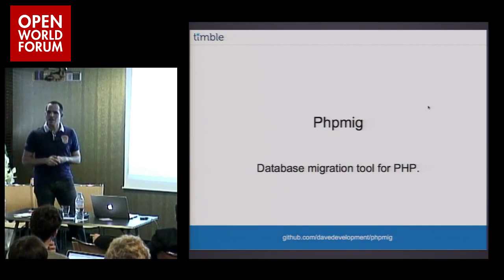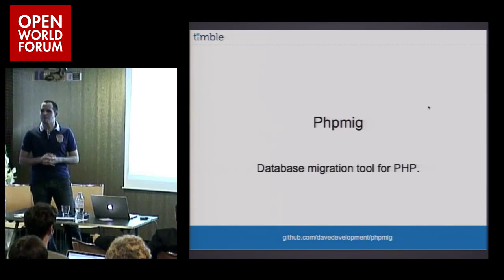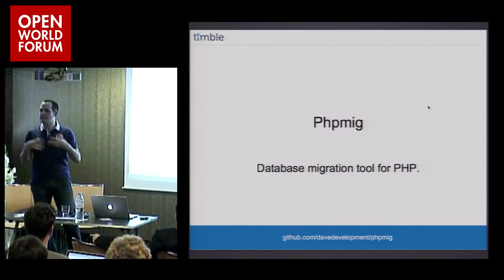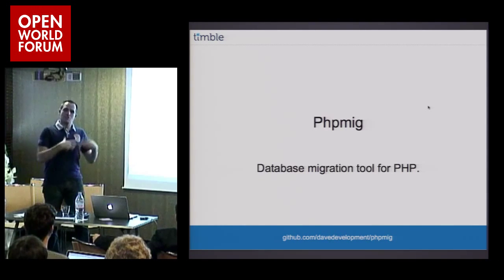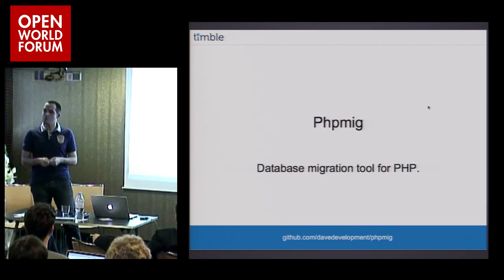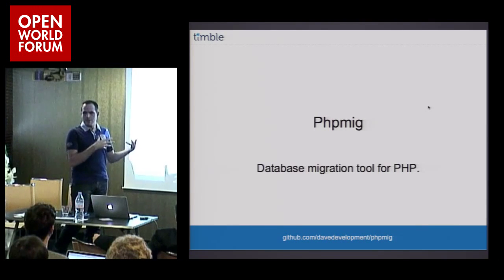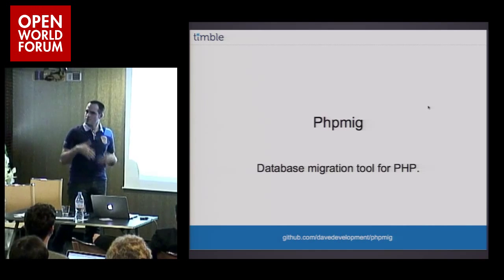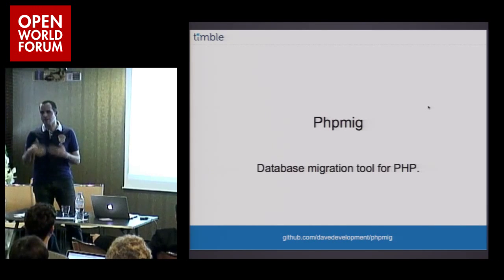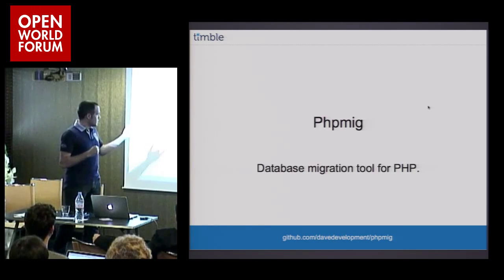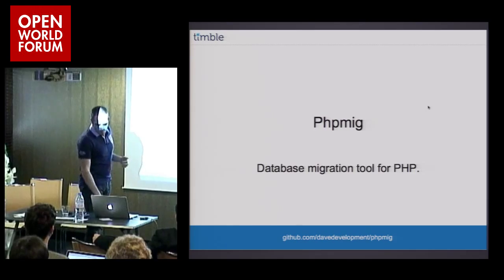PHP Migrate — maybe you notice if you're a PHP developer. This is a tool to do PHP database migrations. If you start deploying on a server and making changes to your database, you also need to migrate your database changes, and this is where the tool comes in. We've integrated it with Capistrano, so you can do an 'up' and then a 'down'. If something goes wrong, you do a down and go a version back. That's what you do with database migrations.